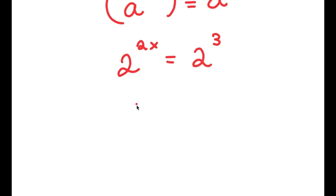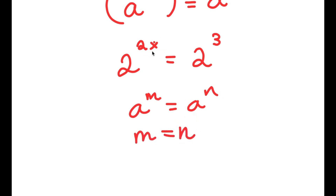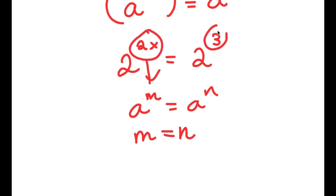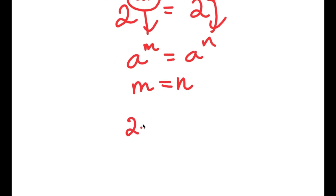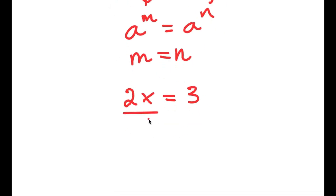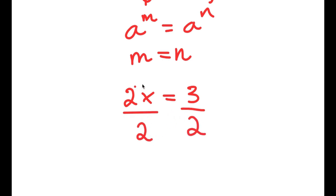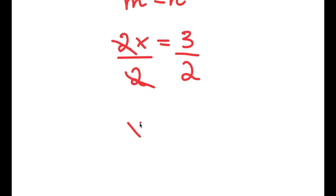If I have something in the form a to the power of m is equal to a to the power of n, this means that m is equal to n. So in this case, 2x is equal to m and 3 is n, giving me 2x is equal to 3. This is a simple equation — all I have to do is divide both sides by 2. These two cancel out and I get x is equal to 3 over 2.